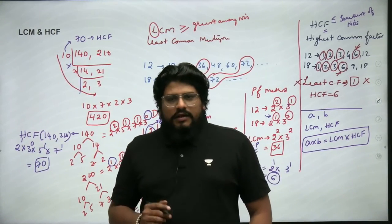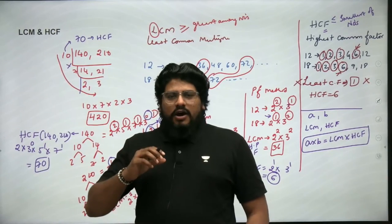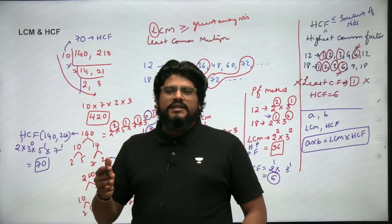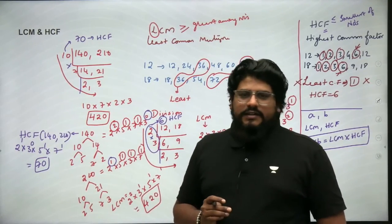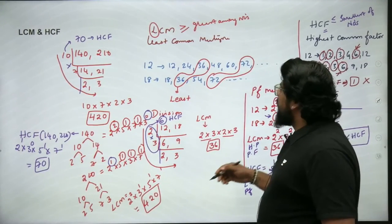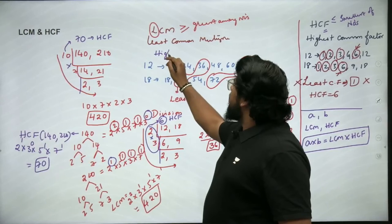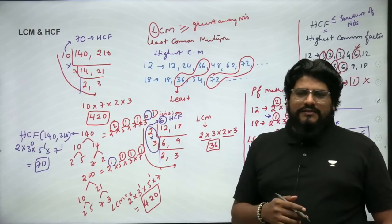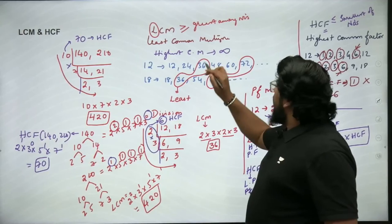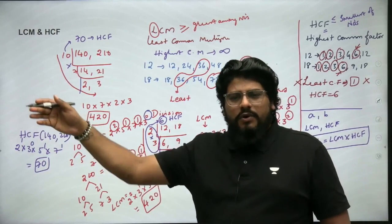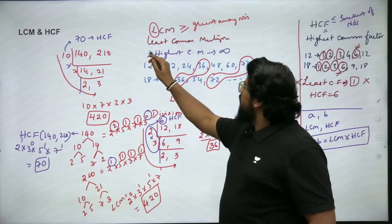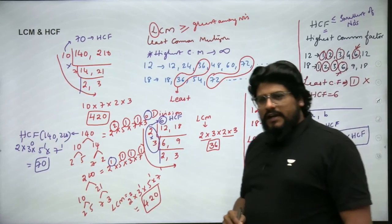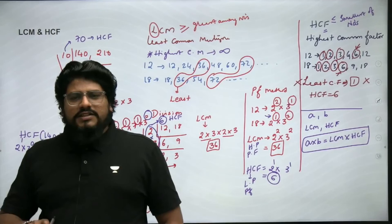To recap: LCM (Least Common Multiple) is the least number found among the common multiples, and HCF (Highest Common Factor) is the highest number found among the common factors. Also note that we cannot find a 'highest common multiple' because the common multiples go on infinitely. And the least common factor between any two numbers is always 1.